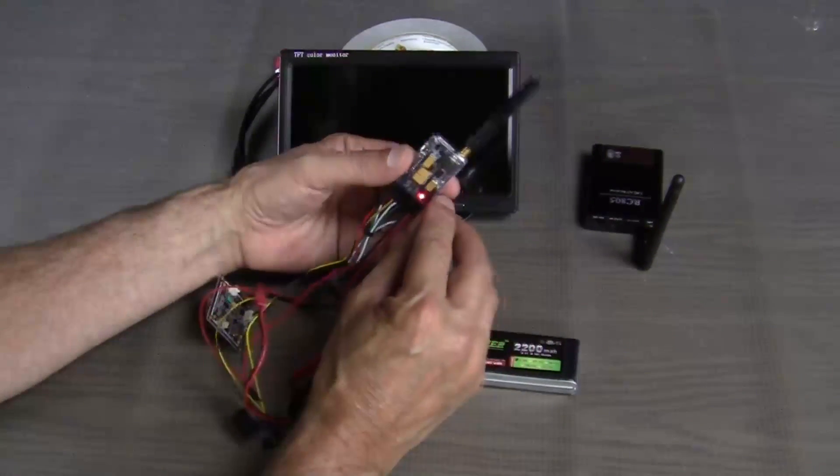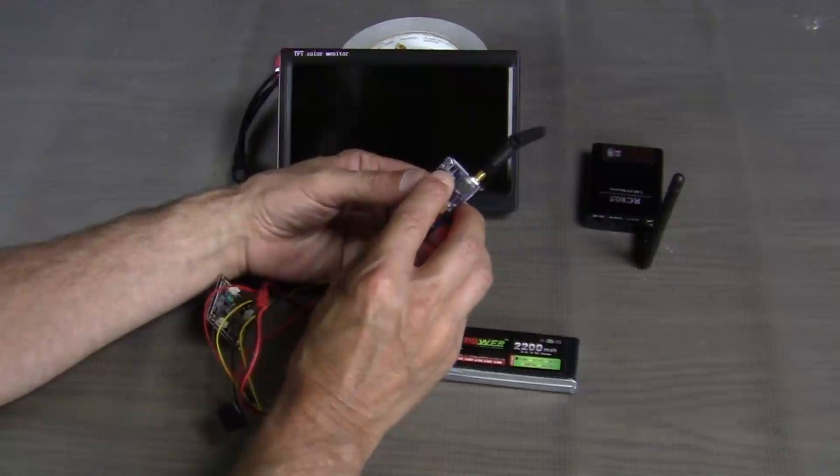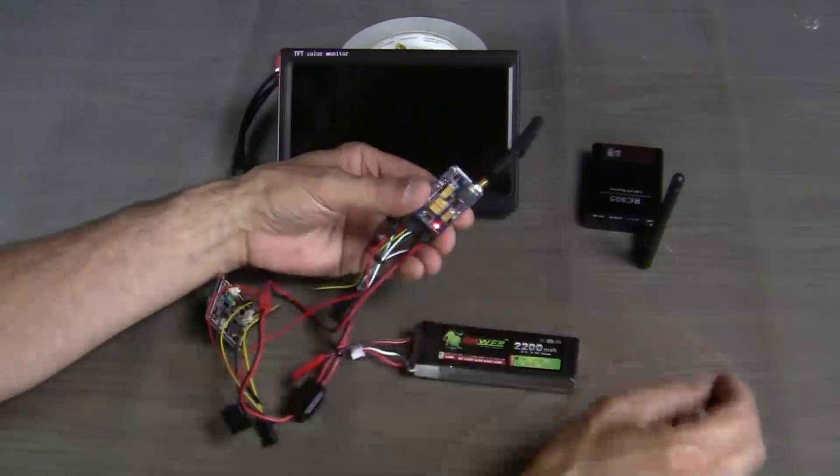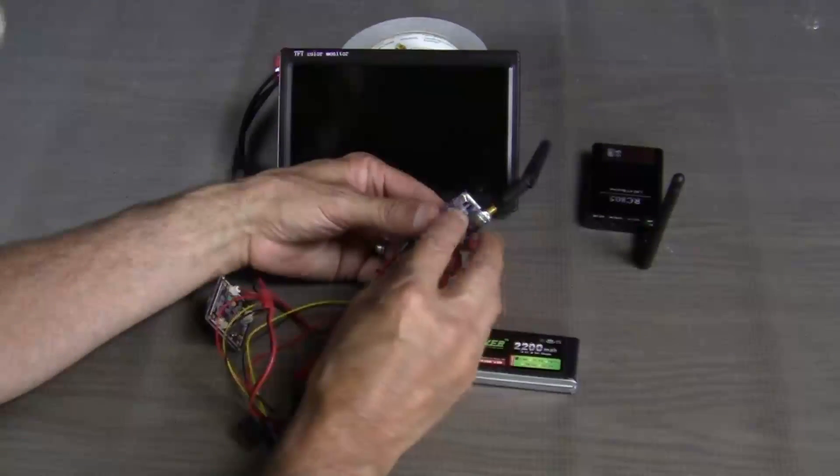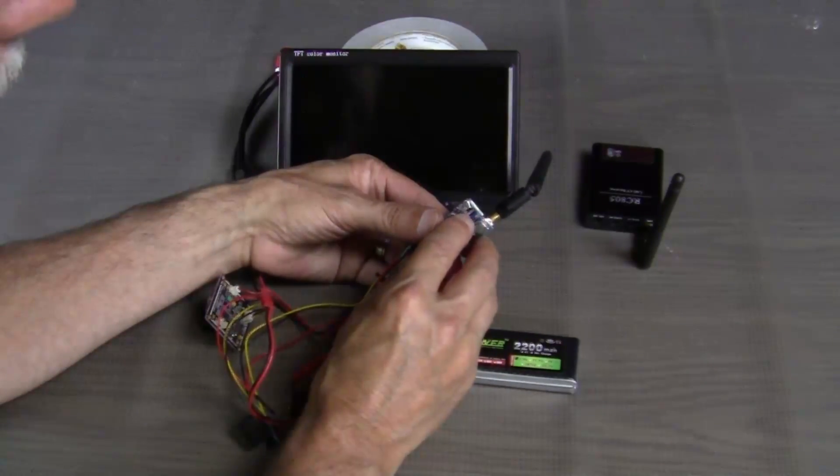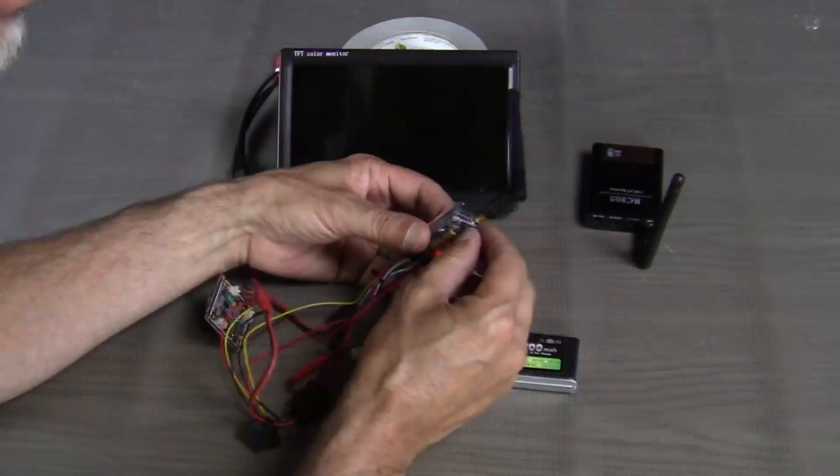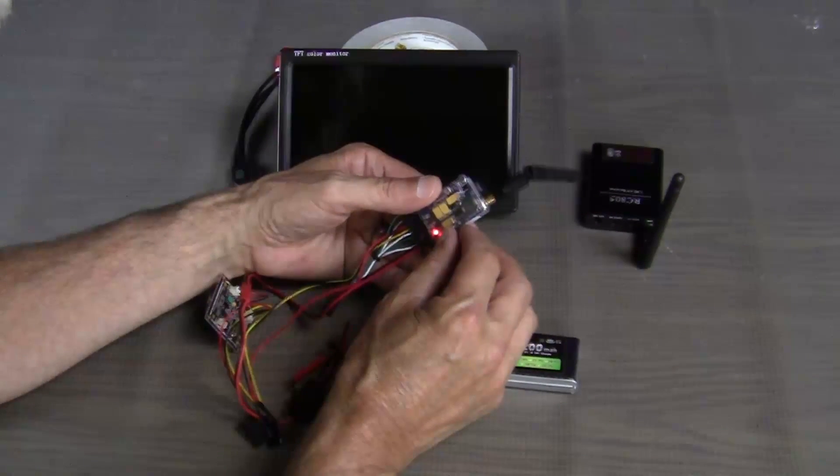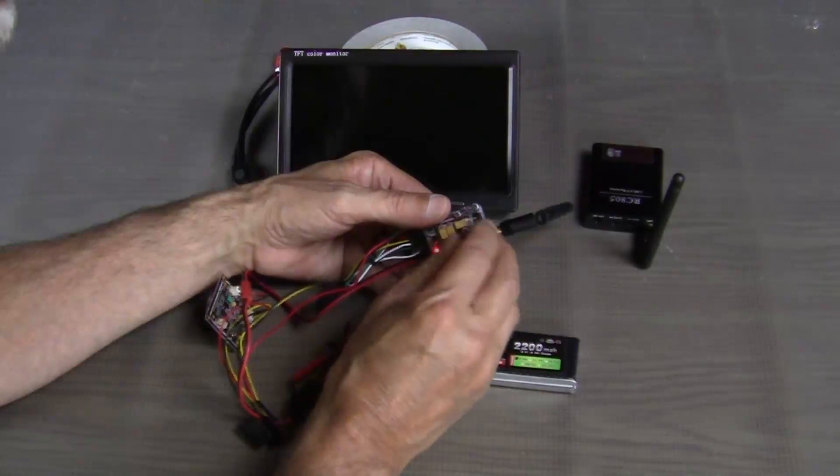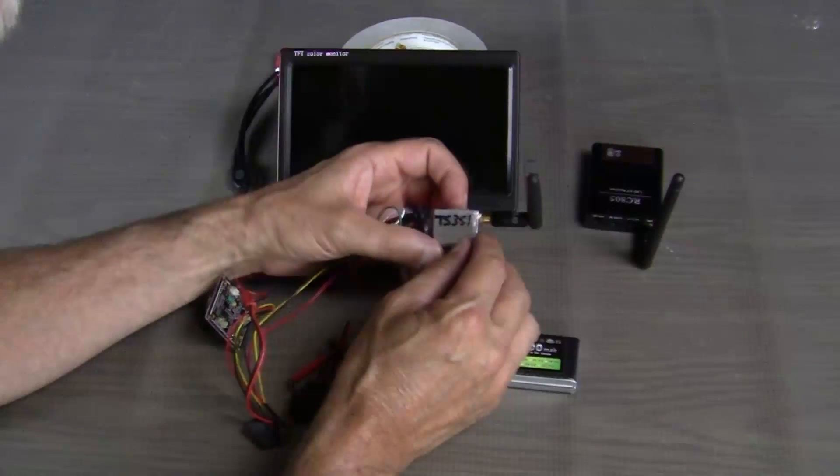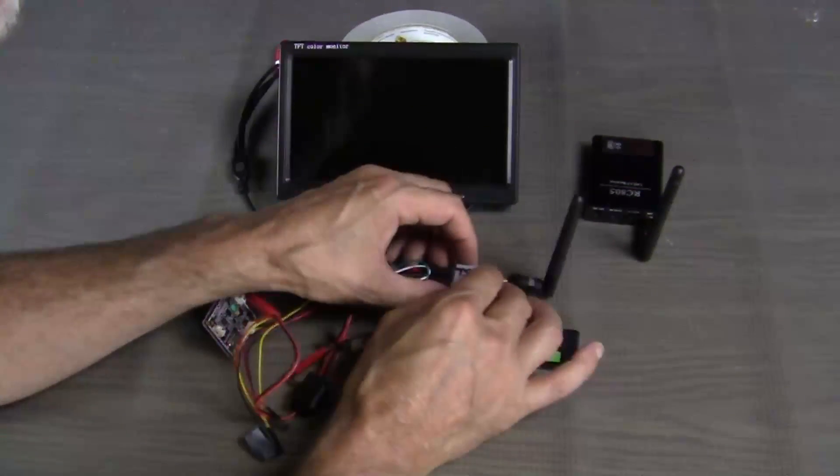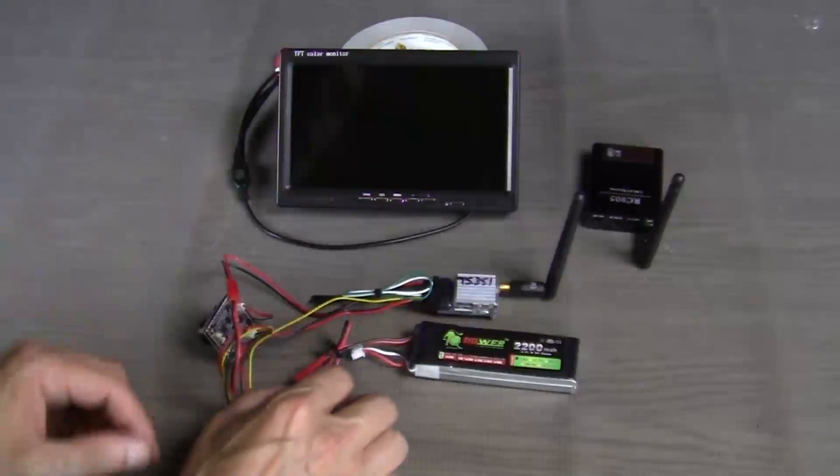Another thing that you want to do is right here is several dip switches. So you want to take a razor blade and carefully cut out the protective wrap that's on the transmitter itself. That way you can easily get to these dip switches if you have to make changes to your channel. So that's it for the transmitter and the camera.